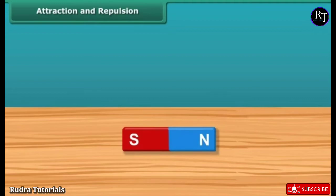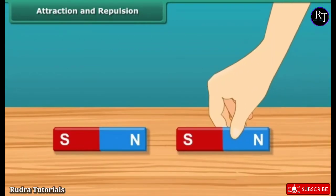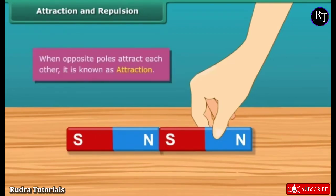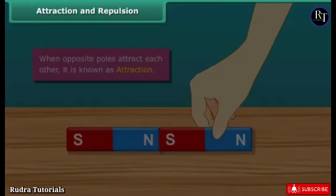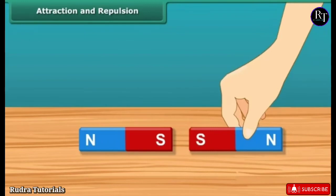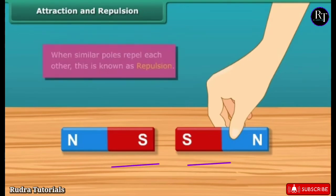Attraction and repulsion — now that you know about poles of a magnet, let us look at the attraction and repulsion properties. When the south pole comes in contact with the north pole, they get attracted to each other — this is known as unlike poles attracting each other. Similarly, when the south pole comes in contact with another south pole, they repel each other — this is known as similar poles repelling each other.